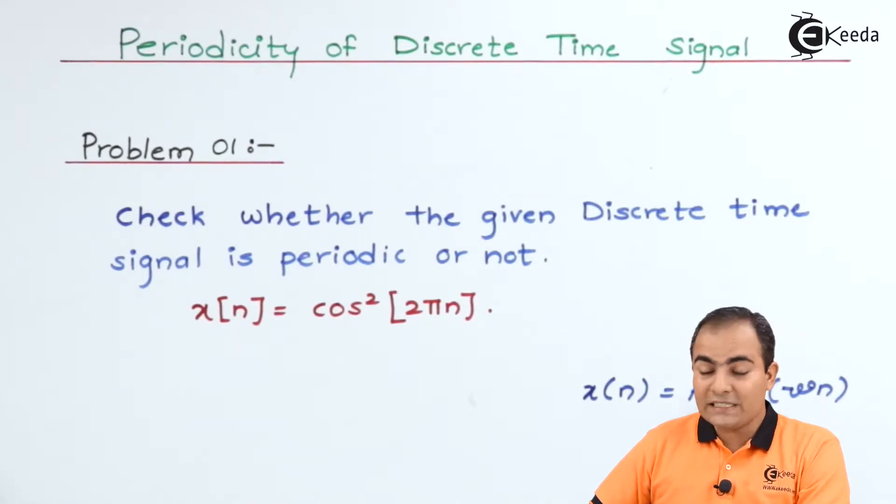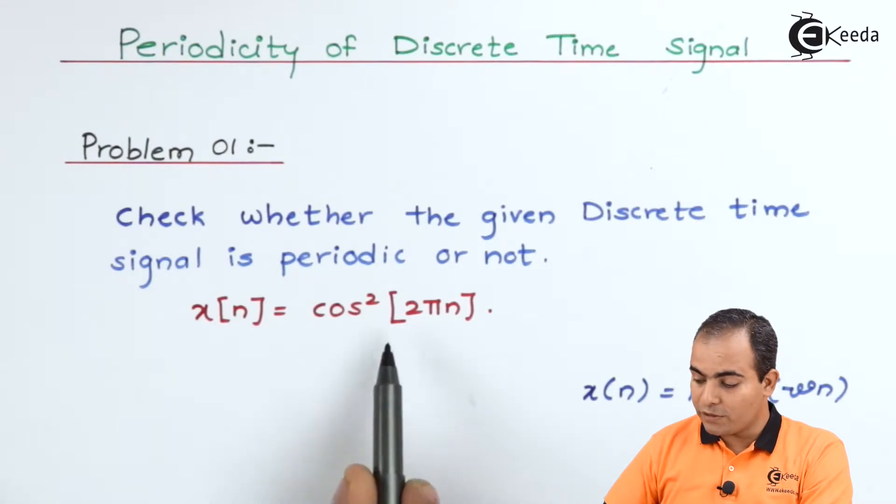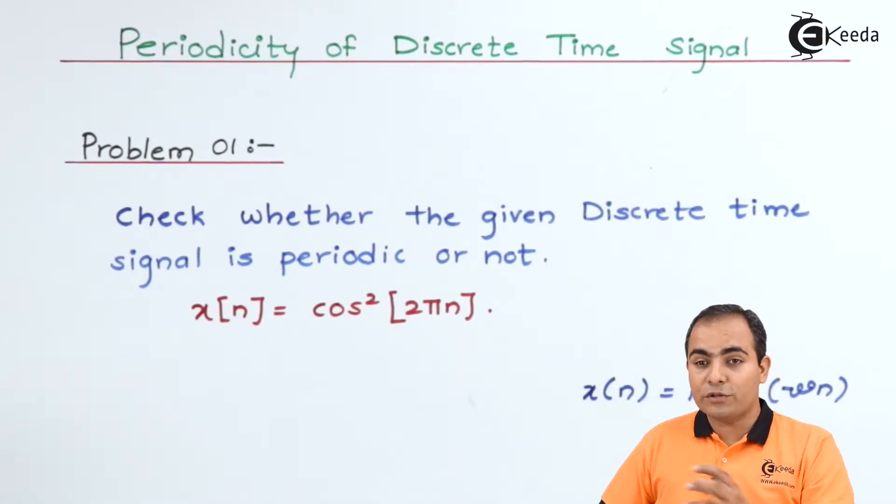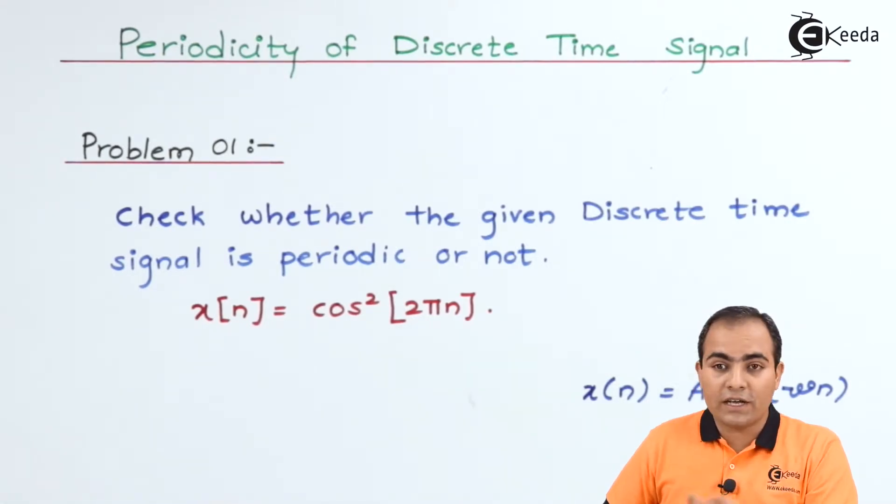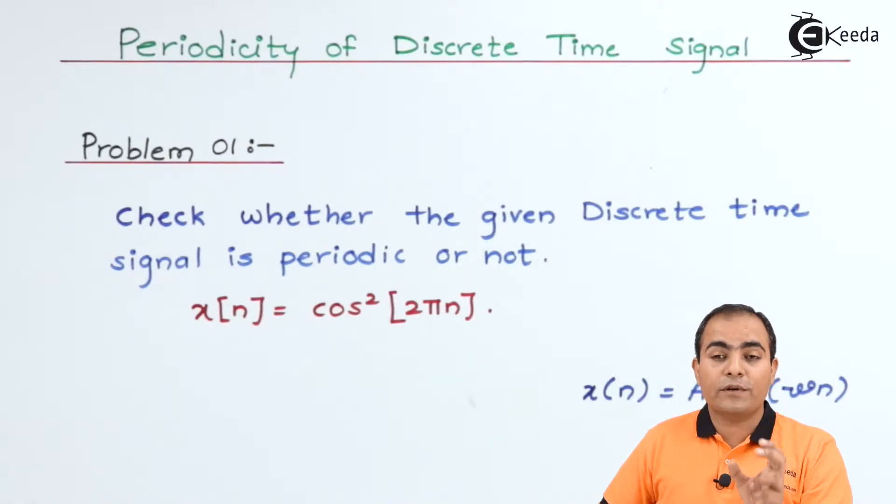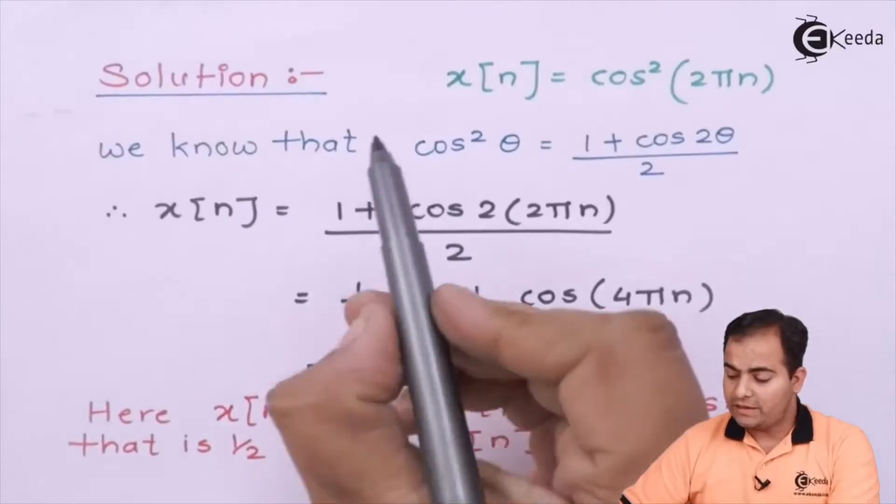First we'll see what is asked. x[n] equals cos squared 2πn. We want the function in only cos, but the question is given in cos square n. So we can use one formula: cos²θ is nothing but (1 + cos 2θ)/2, where my theta value is 2πn. I will show you how to solve this question and how to obtain the total number of samples.